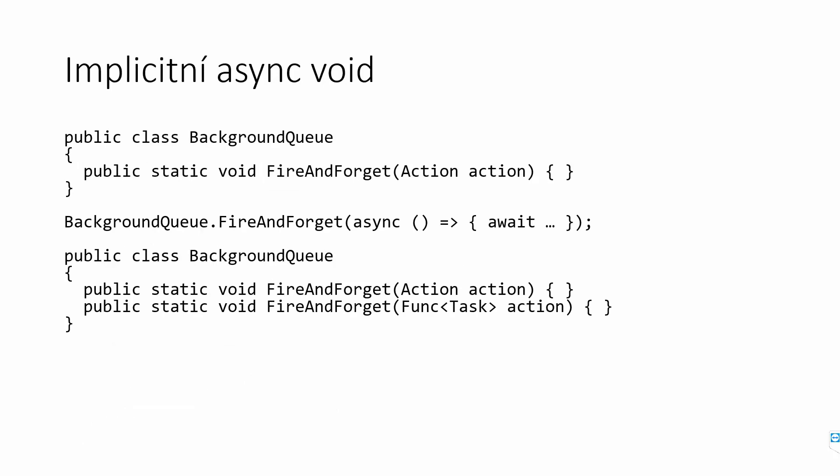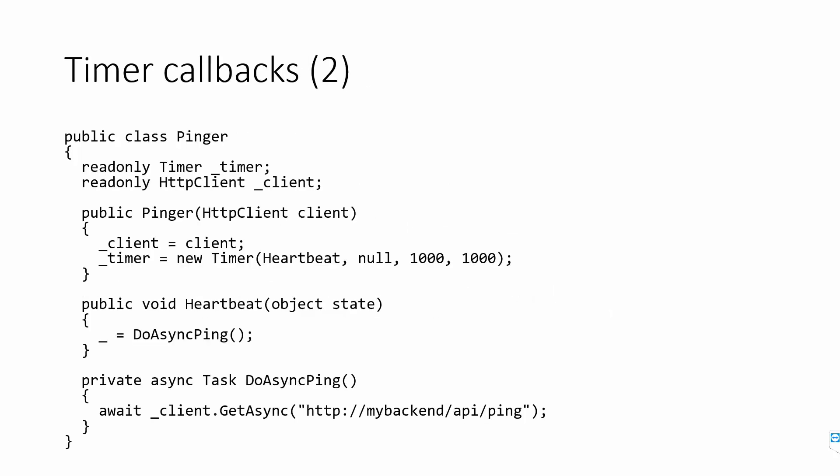There's a question about calling DoAsyncPing without await. Yes, the compiler doesn't warn if you call it without await, without result, without anything — the task will be discarded. If you remove the assignment, the compiler warns that you're starting a task and not doing anything with it. You can assign it to the discard variable (_), and the compiler will be satisfied.